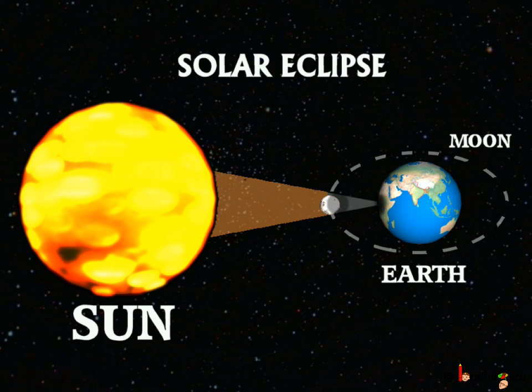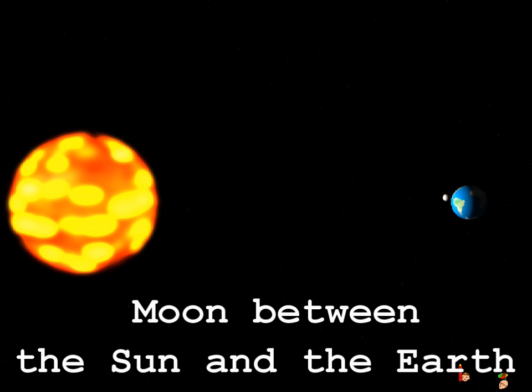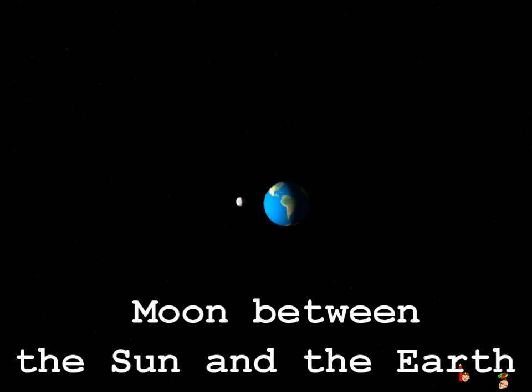Let us look at this video to see how exactly it happens. This is the original position because of the movement of Earth and the Moon. Now slowly because of Moon revolving around the Earth, it comes in between the Sun and the Earth.